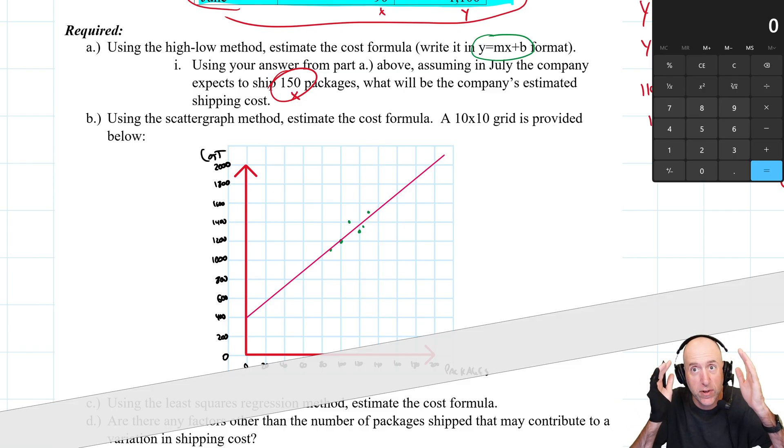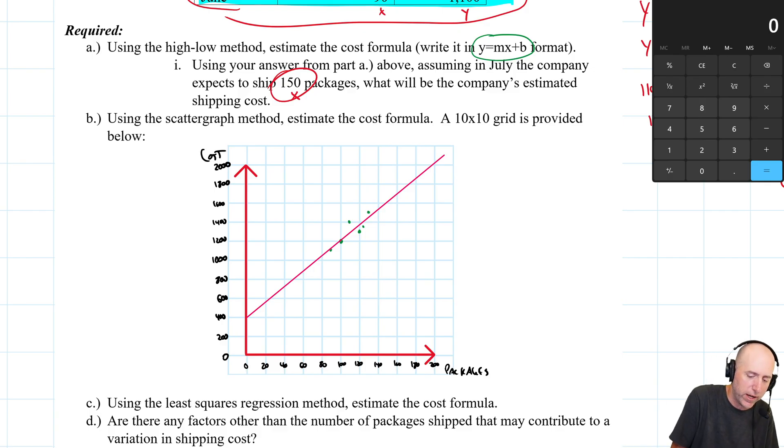Alright, so let me draw the line maybe in pink ink. Let's make it stand out a bit. Oh, this is way too thick. I got the wrong pen. Let me make this pen smaller. There we go. Okay, so drawing my line, doing my best. Sure, there's my line.